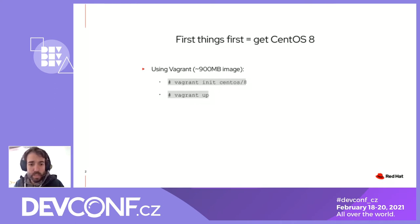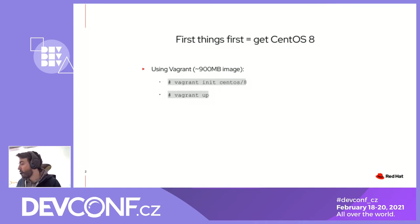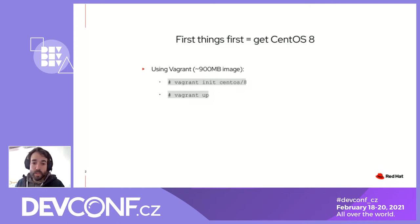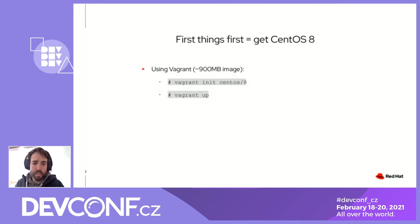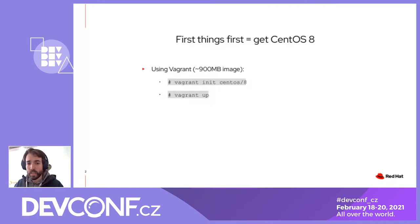I hope you all have Vagrant installed. I tried to send an email to all participants who marked that they are going to join this session. If you haven't read that, please install Vagrant on your system and then do these two steps: vagrant init CentOS slash 8, and vagrant up. This way it's going to start downloading the Vagrant image.